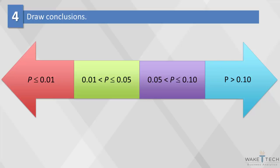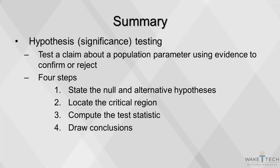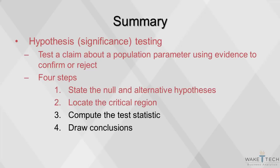However, note that it is unwise to draw firm borders for significance. For example, a p-value of 0.27 would not be significant against H0. A p-value of 0.01, on the other hand, would be highly significant against H0. This concludes our video on hypothesis testing, also called significance testing, which occurs when we test a claim about a population parameter using evidence that confirms or rejects that claim. Today we covered the four steps: state the null and alternative hypotheses, locate the critical region, compute the test statistic, and draw conclusions.